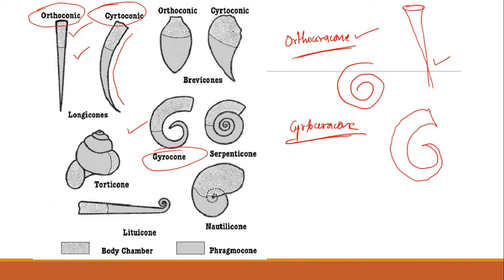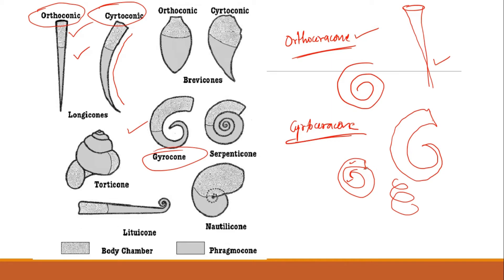Then you have tarphyceracones. In tarphyceracones they show complete coiling and the walls are in contact with each other. You can see that there is complete coiling and the walls are touching each other — the coil shapes are called walls. This is a serpenticone, same as your tarphyceracone — completely coiled and walls are touching each other.